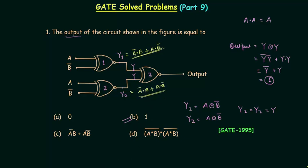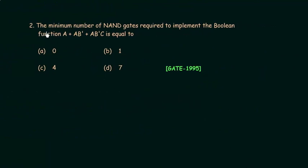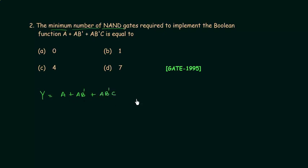Now we move to problem number 2. In this problem, we have to find the minimum number of NAND gates required to implement the boolean function: a OR (a AND b') OR (a AND b' AND c). The first step is to minimize the given function.